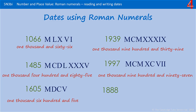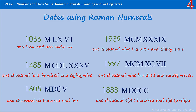The final one, 1888 — the longest date I could think of in Roman numerals. 1000 is M. 800 is 500 add 300. 80 is 50 add 30. And 8 is 5 add 3.